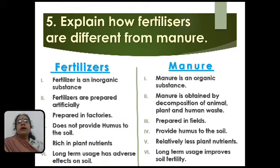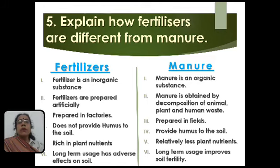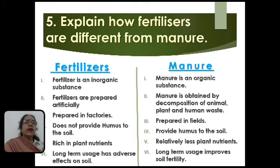Fertilizers are prepared in factories, whereas manure is prepared in fields. Fertilizers do not provide humus to the soil, whereas manures provide humus to the soil. Fertilizers are rich in plant nutrients, whereas manures relatively contain less plant nutrients. Long-term use of fertilizers has an adverse effect on soil, whereas long-term use of manure improves soil fertility.